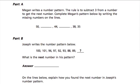All right, in this problem we have two parts. In the first part, part A, Megan writes down a number pattern. The rule is to subtract 3 from a number to get the next number. Complete Megan's pattern below by writing the missing numbers on the lines.